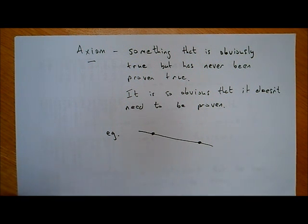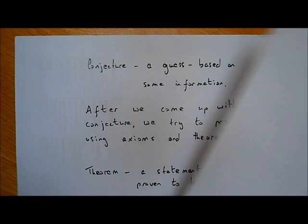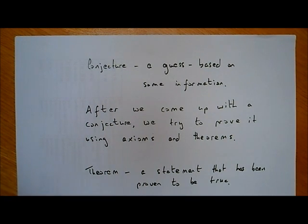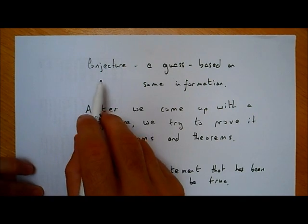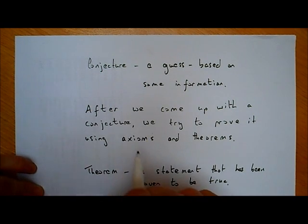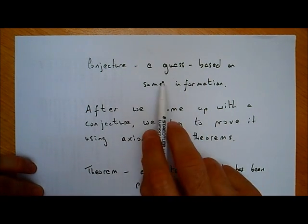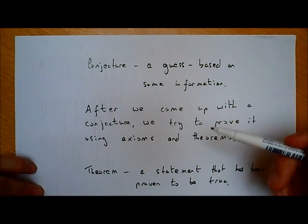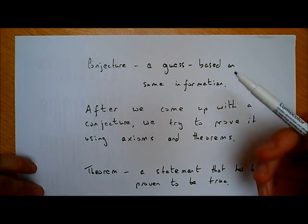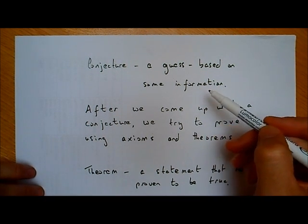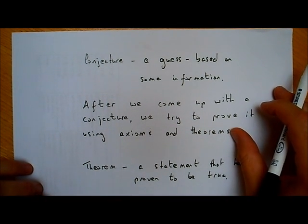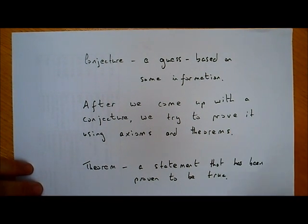Maths is full of these axioms. The next thing I want to have a look at is the definition of a conjecture. A conjecture in maths is just a guess — but not just a random guess. It's a guess based on some information, so it's an educated guess.